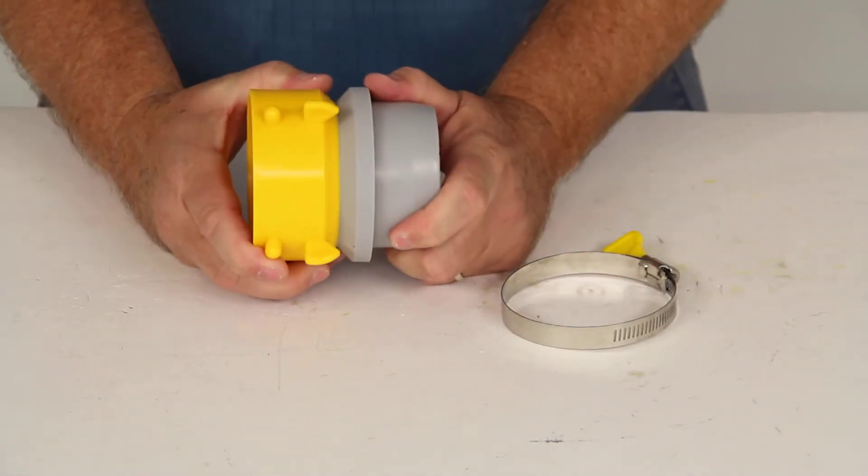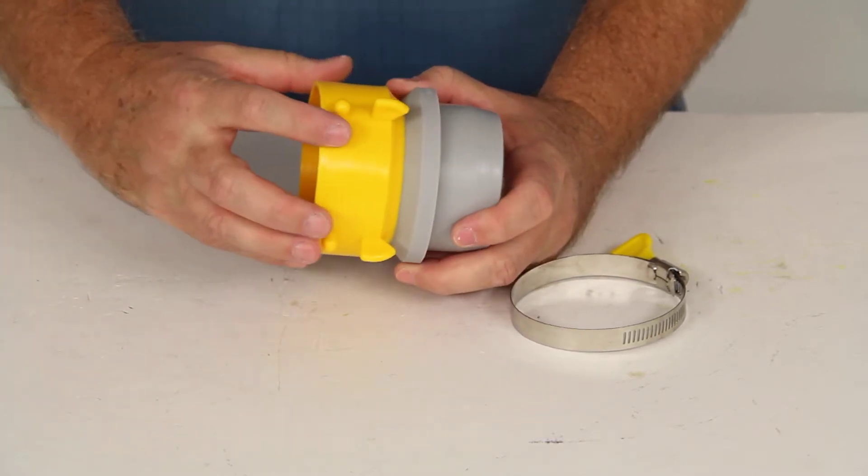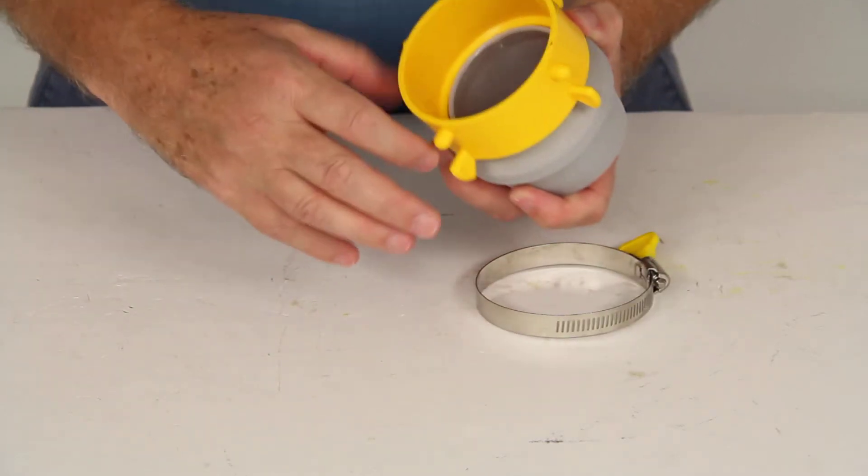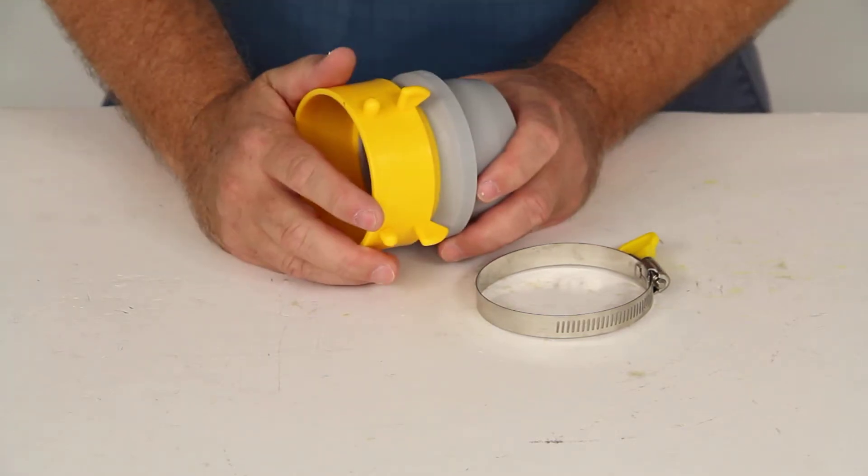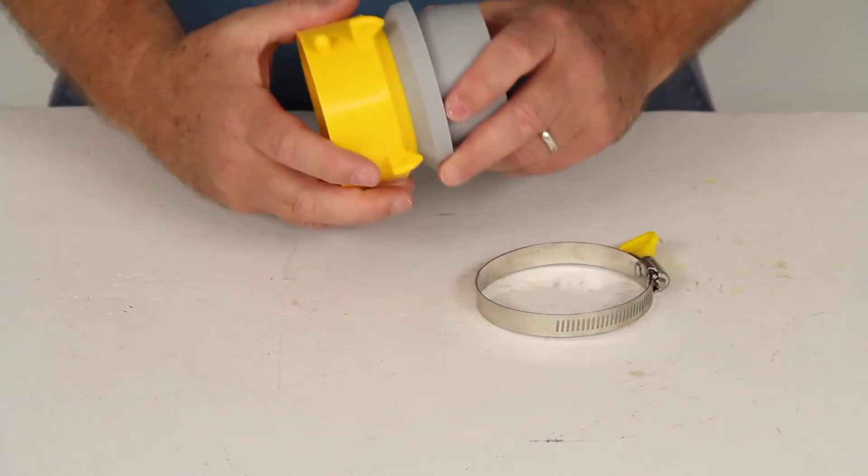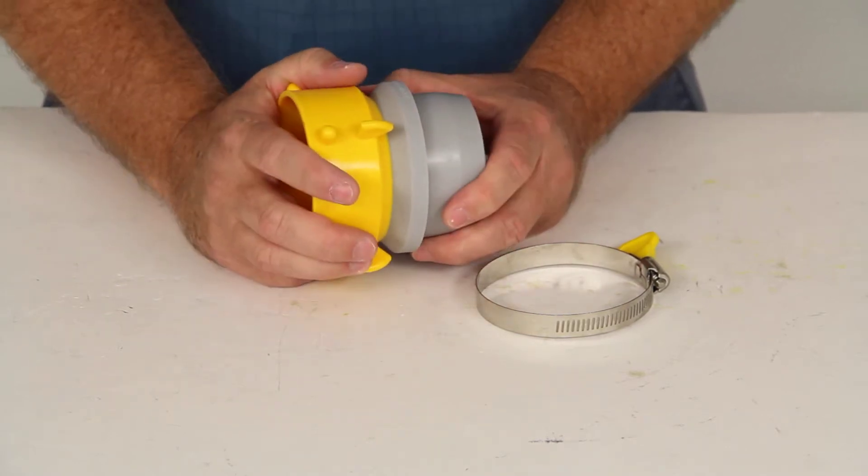This lug fitting will connect to your RV sewer hose to provide a connection point for a bayonet fitting. A bayonet fitting would fit right on here, line up with those four lugs, and then twist on to give a nice odor-tight connection. These four sturdy lugs right here will provide the points for the bayonets to hook to.